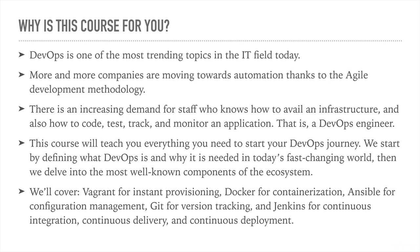Then we delve into the most well-known components of the DevOps ecosystem. We'll cover Vagrant for instant provisioning, Docker for containerization, Ansible for configuration management, Git for version tracking, and Jenkins for continuous integration, delivery, and deployment.